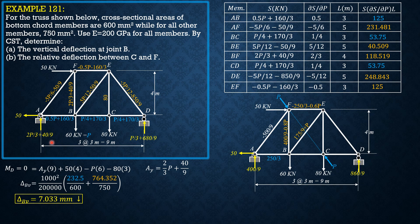Since the original P is 60 kN, AY equals two-thirds of 60 plus 40 over 9, giving 400 over 9. And RD equals 60 over 3 plus 680 over 9, giving 860 over 9. Members not attached to F or C will not be functions of the invented P. Only members attached to F, C, or potentially BE will be functions of P and should be tabulated.